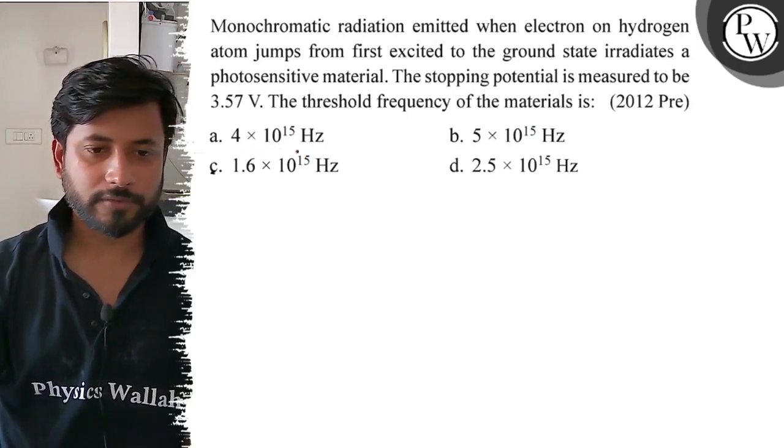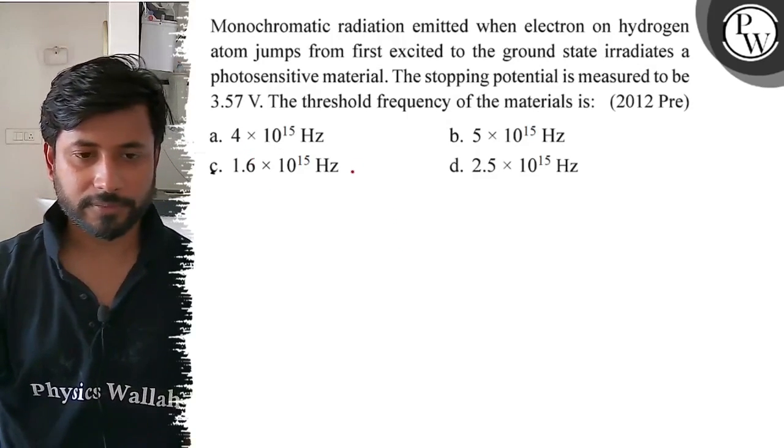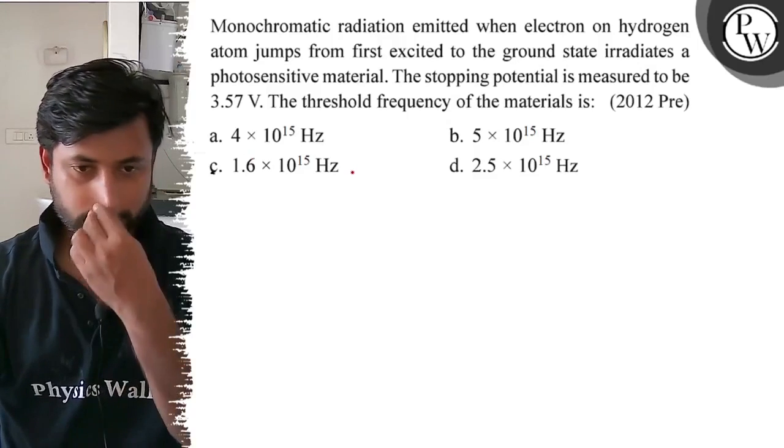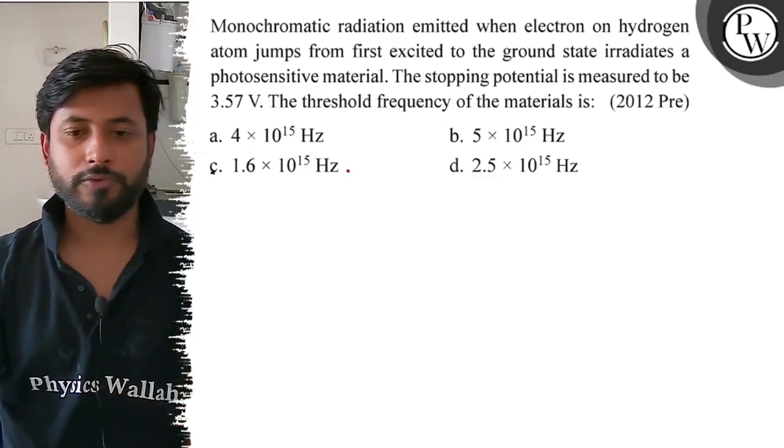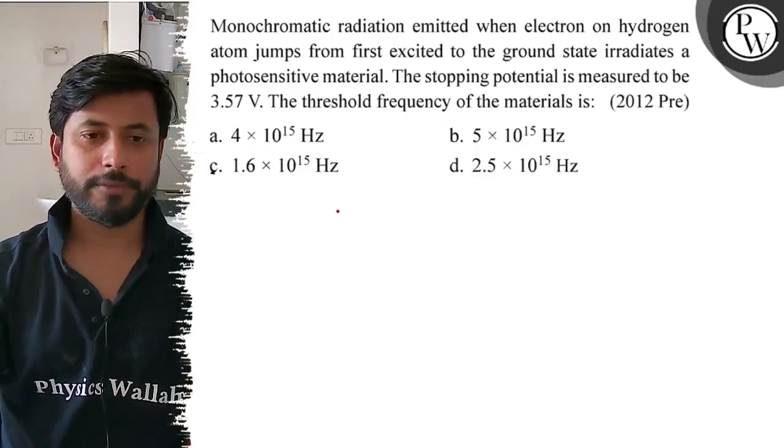Option A: 4×10^15 Hz, option B: 5×10^15 Hz, option C: 1.6×10^15 Hz, option D: 2.5×10^15 Hz.